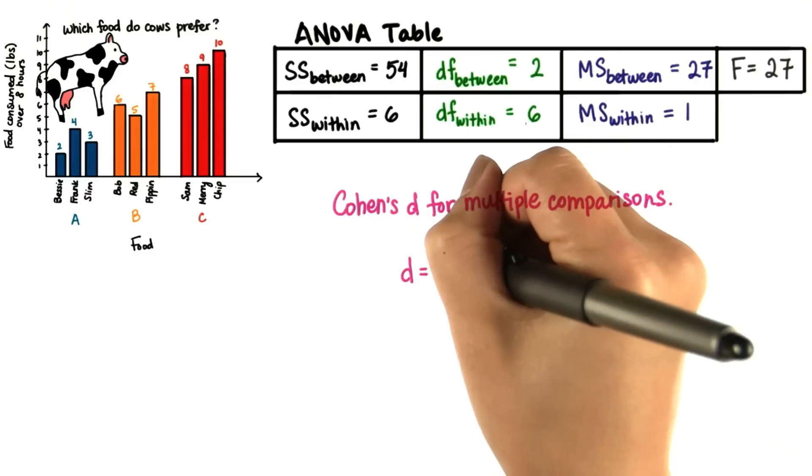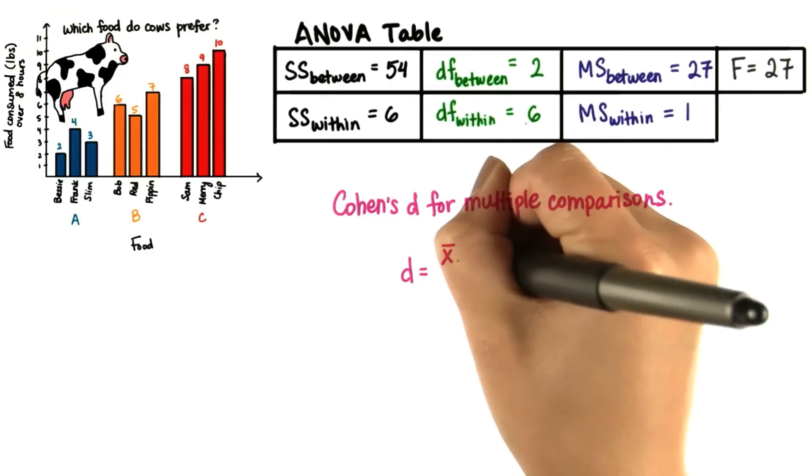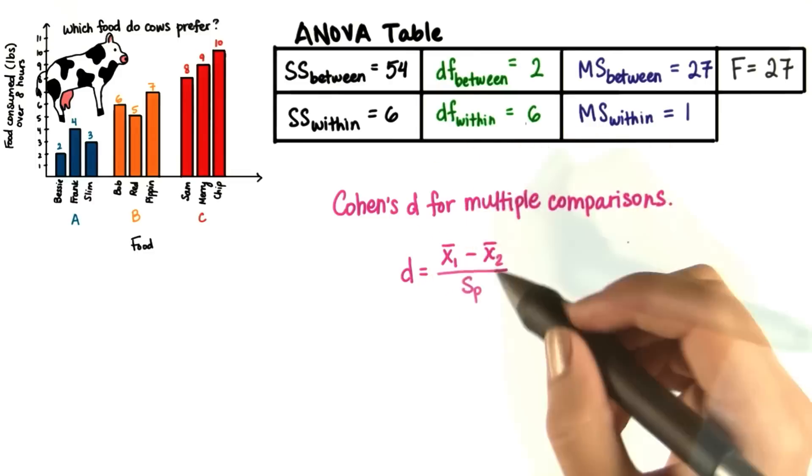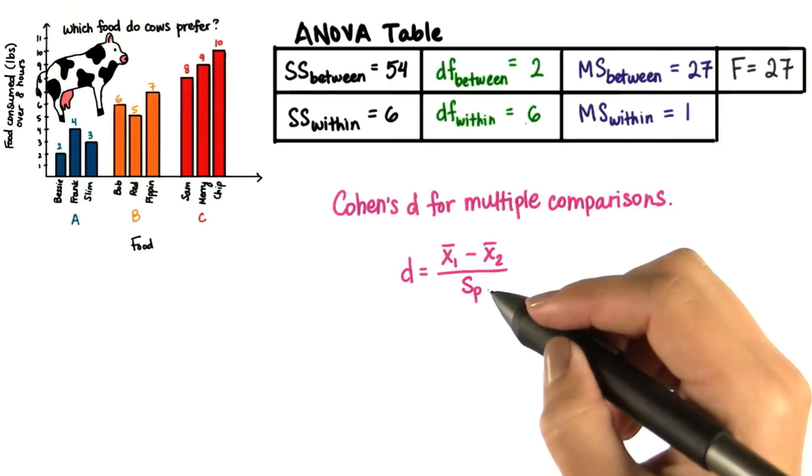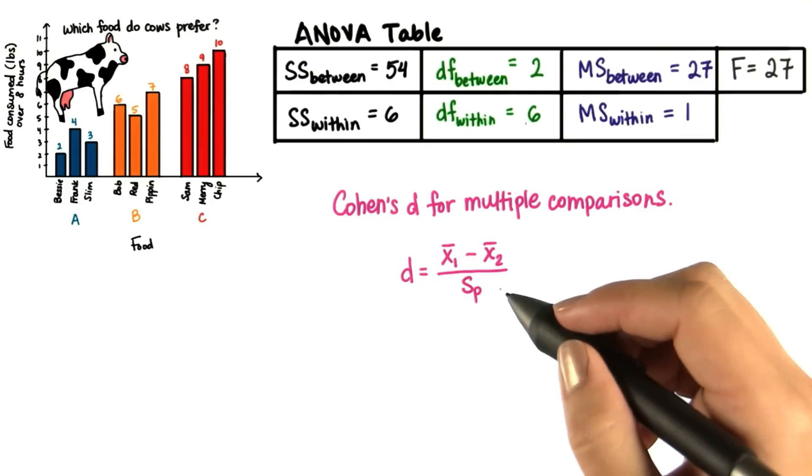You've learned before that Cohen's d is the difference between sample means divided by the pooled standard deviation in the case of independent samples t-tests.